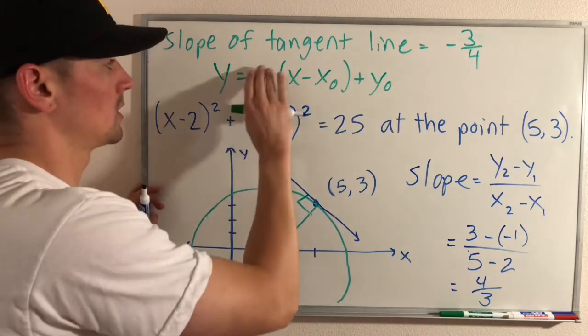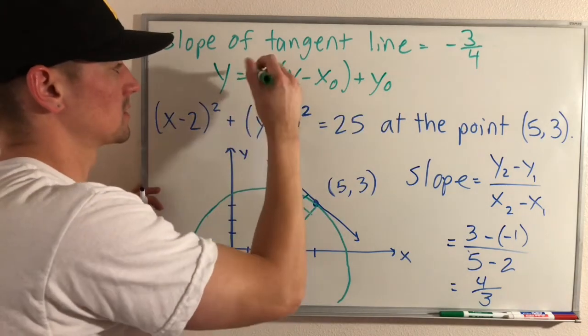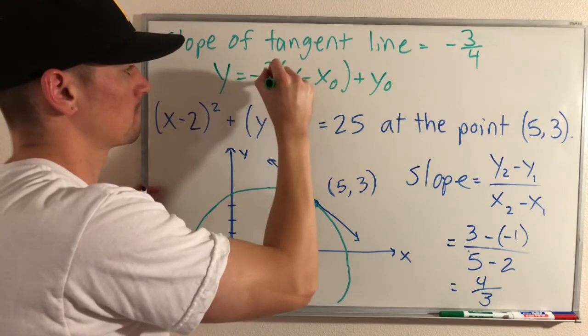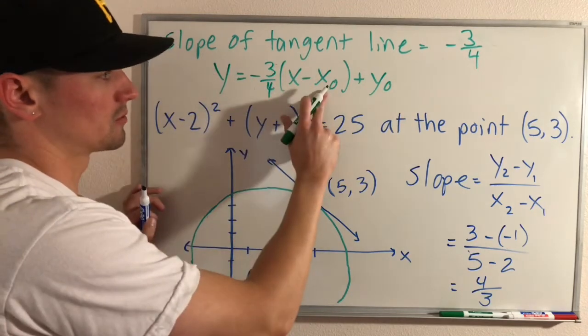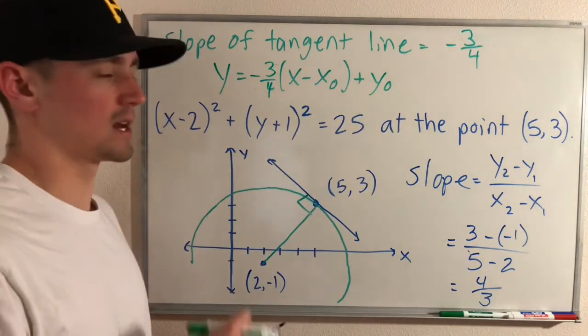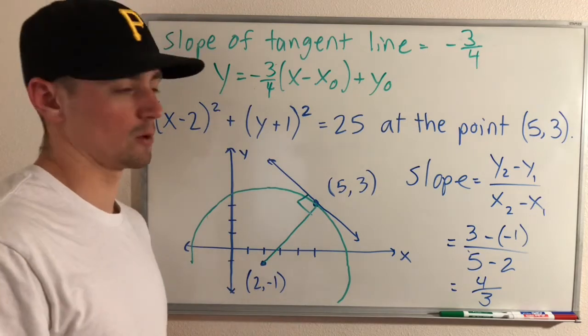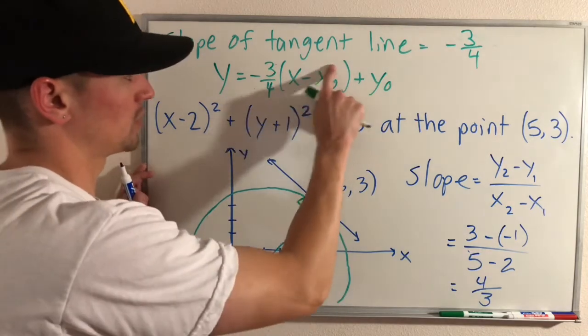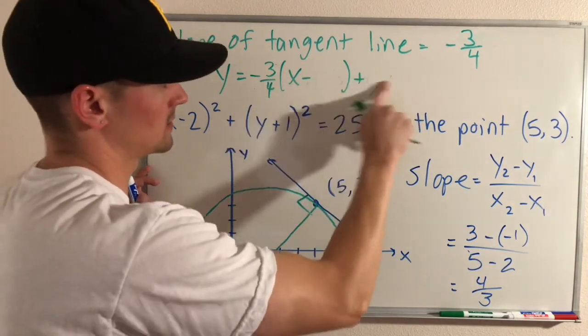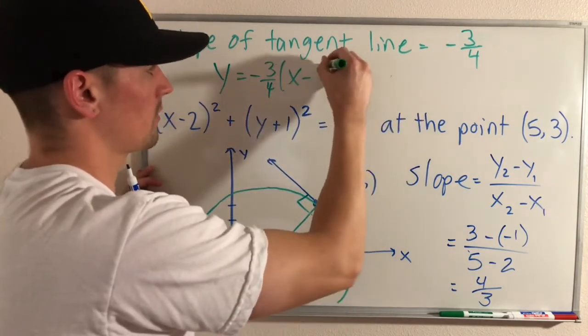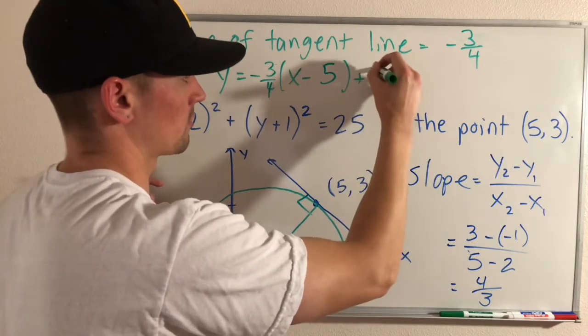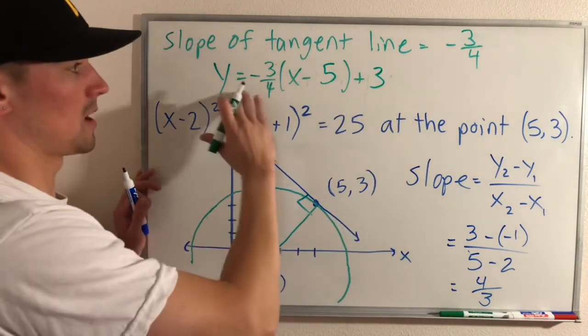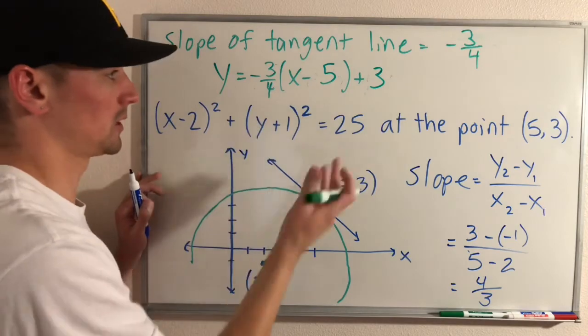Where m is our slope and then we know that this line goes through the point (x₀, y₀). So if we put -3/4 in for our slope, then all we need to do is replace our x₀ and y₀ with an x and y coordinate of a point that we know lies on this line. Well, we know that this point (5, 3) lies on our line so we can put that in for our x₀, y₀. 5 is the x coordinate and 3 is the y coordinate. So now we have this equation which we could then just simplify.